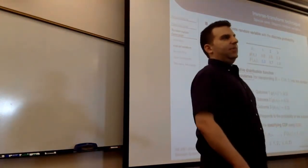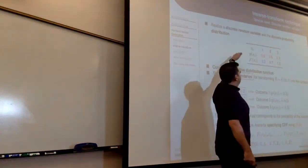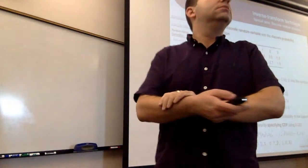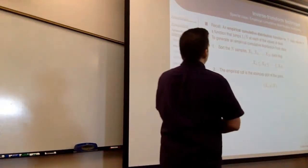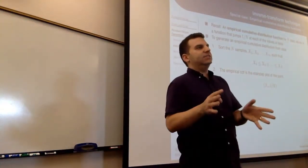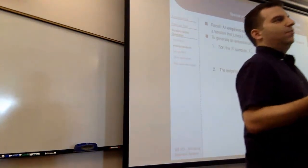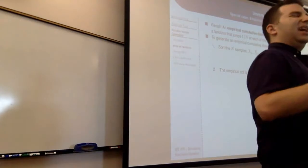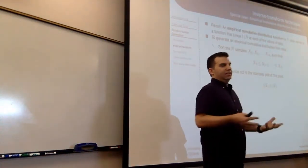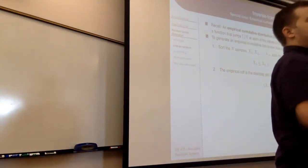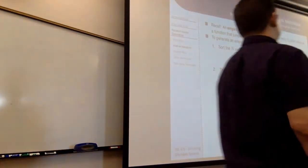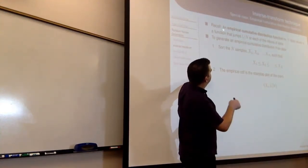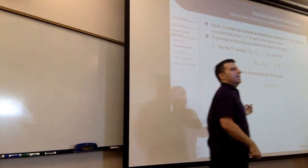Any questions about going from a probability mass function to an outcome and encoding that in Arena? We can also use the DISC function and this general process to work with data even when they don't necessarily come from a discrete distribution — we can approximate them by a discrete distribution. This makes it more convenient to sample from something when we're not quite sure what the real continuous distribution is.